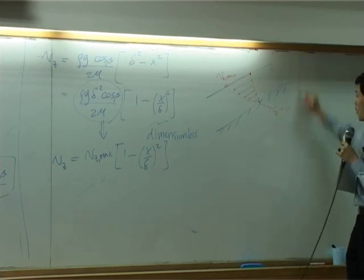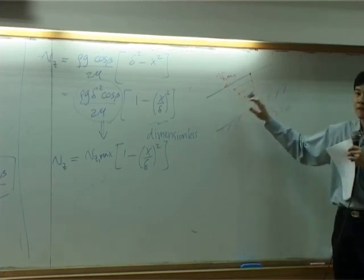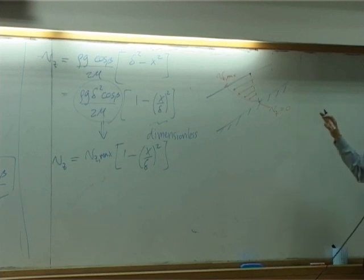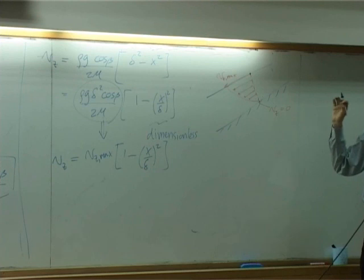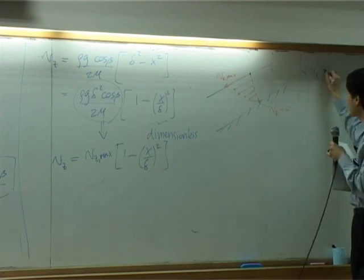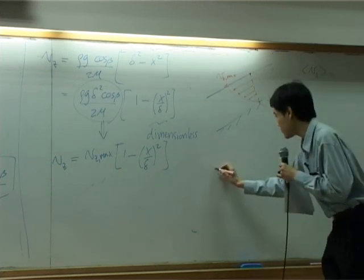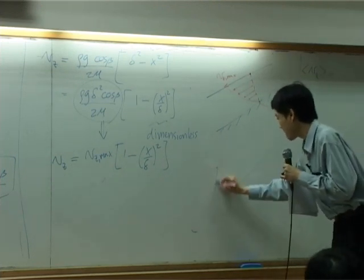There's a little bit more to the problem. Once you obtain velocity profile, then you can also get something else. Some other information. For example, you can calculate average velocity. Average velocity. By definition, if I write down three-dimensionally.